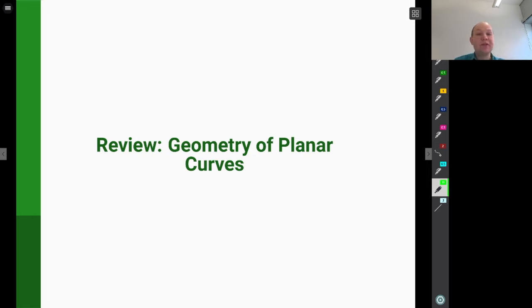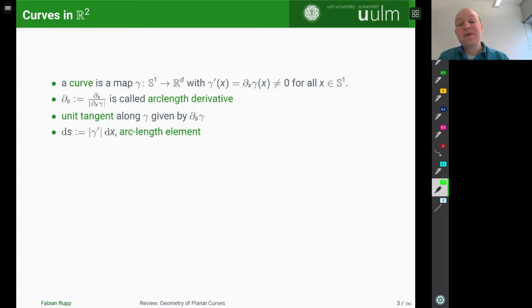So let's quickly review the geometry of curves in the plane. For today, a curve will just be a smooth map gamma from the circle S¹ into R^d, which has nowhere vanishing derivative, so it's an immersion. And to such a curve we can associate the arc length derivative, which is given by the ordinary derivative d_x, and then we normalize and divide by the length of the velocity of gamma, which is always assumed to be non-zero.